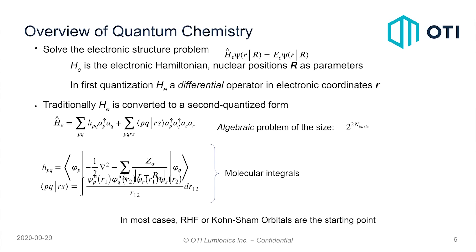Since not everyone is an expert in quantum chemistry, I'll give a high-level overview. All quantum chemistry, similar to a lot of other quantum mechanics, involves trying to solve the Schrödinger equation. Specifically in quantum chemistry, the electronic structure calculation describes how electrons behave around a molecule — how they move from one orbital to another, where their general locations are, and what is the overall energy of the molecule. Here, H is the electronic Hamiltonian.